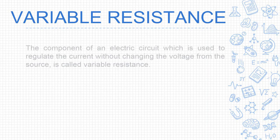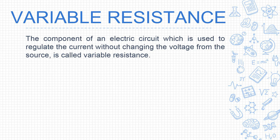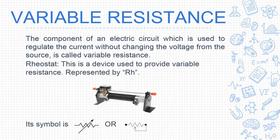Next is variable resistance. A component of an electric circuit used to regulate the current without changing the voltage from the source is called variable resistance. A device called a rheostat is used to provide variable resistance. Rheostat is represented by Rh, and its symbol is also given.